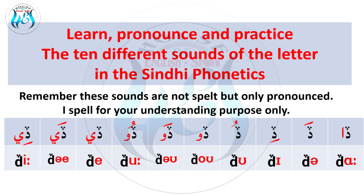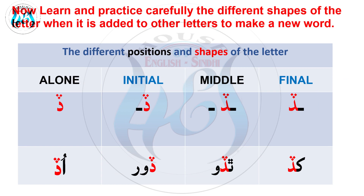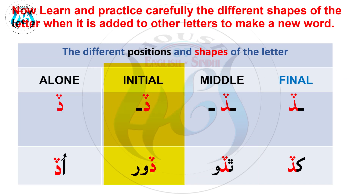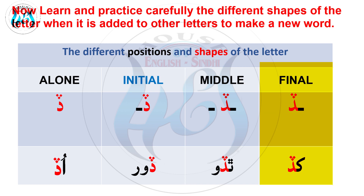Now pronounce again. The different positions and shapes of the letter — alone or isolated: Ud; Initial: Dore; Middle: Thudu; Final: Khad.